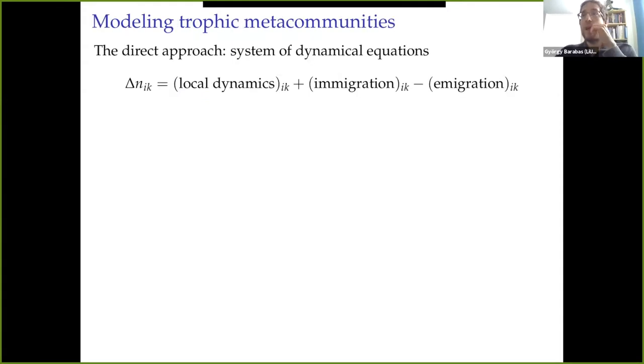How can we describe these metacommunities? There are many approaches in the literature that exist. The most direct and most commonly used one is just to model the abundance N of species i in patch k. So that's the density of species i in patch k. ΔNik is the change from one timestamp or one moment to the next.